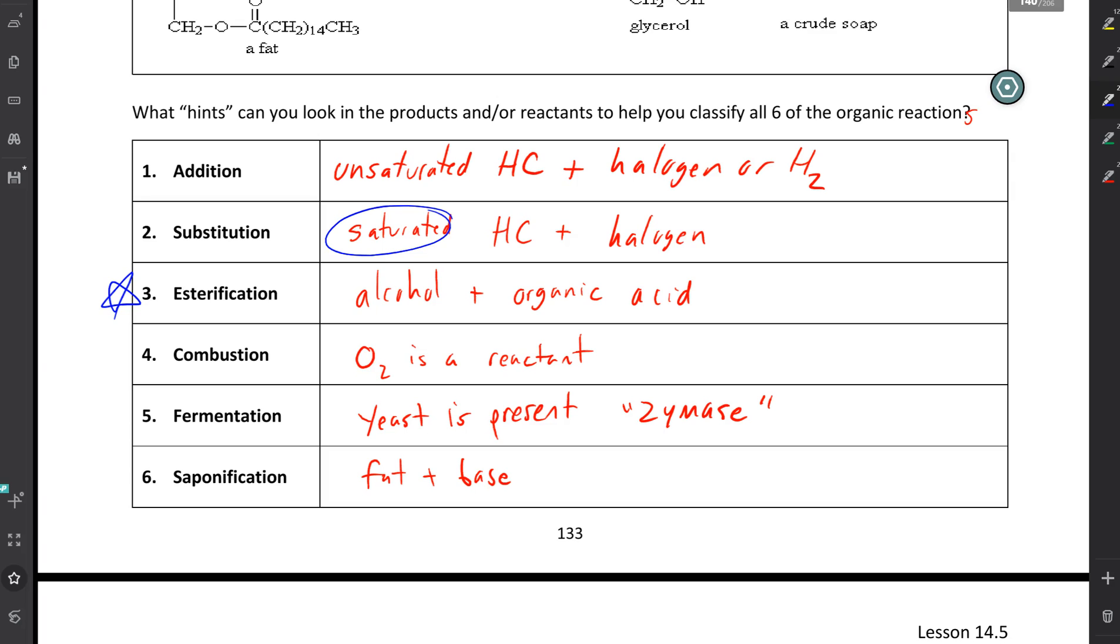Combustion reactions are usually pretty easy for students to pick out, just because we've talked about them before. In a combustion, we need O2 to be one of the reactants. We're going to react that with a hydrocarbon and produce lots of energy very quickly.